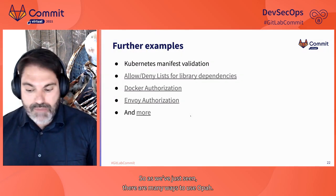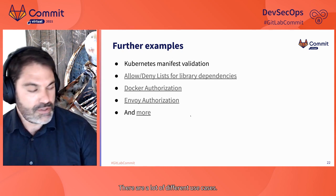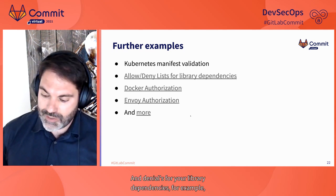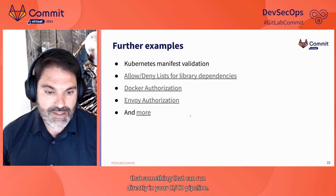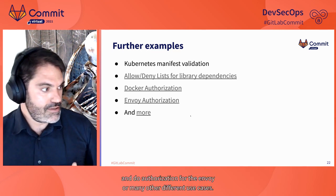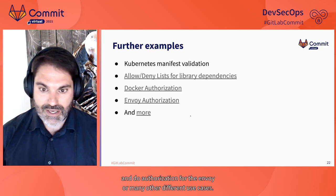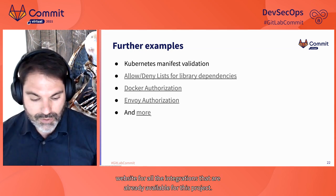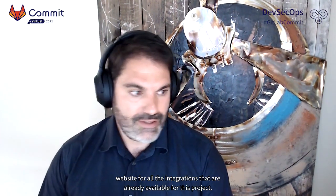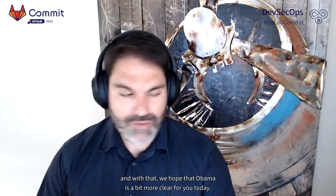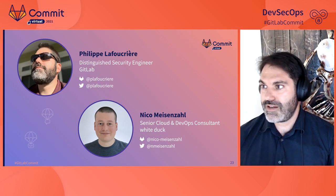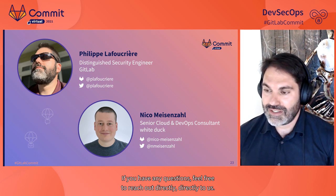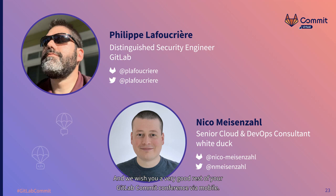As we've just seen, there are many ways to use OPA with many different use cases — validating Kubernetes manifests, building allow/deny lists for library dependencies directly in your CI/CD pipeline, or running OPA as a daemon for authorization with Envoy and many other options. We invite you to visit openpolicyagent.org for all the available integrations — it's amazing to see how many there are. We hope OPA is a bit clearer for you today and that you'll enhance your compliance and governance with policy-based CI/CD. If you have any questions, feel free to reach out directly to us. We wish you a very good rest of your GitLab Commit conference.